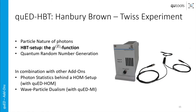Let's continue with the Q-Add HBT, the Hanbury Brown-Twiss experiment, where we basically have a fiber-based beam splitter and also an additional single photon detector module that you can insert into the control unit. With this setup you can measure the G2 function, so you can see that you actually have single heralded photons. You can observe the particle nature of photons, and also generate quantum random numbers just by observing which output port of the beam splitter is chosen by the impinging photon. In combination with other add-ons, this is a very nice setup.